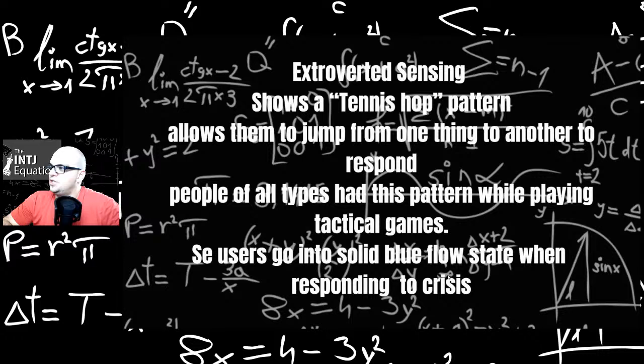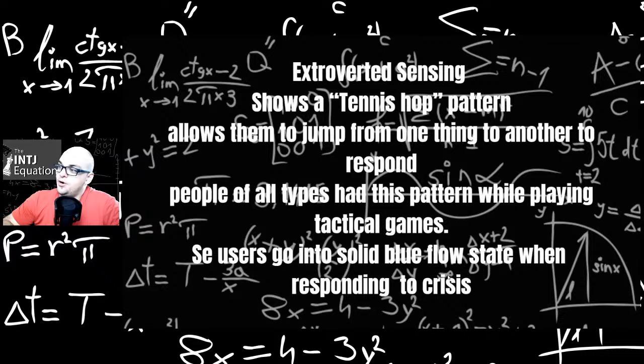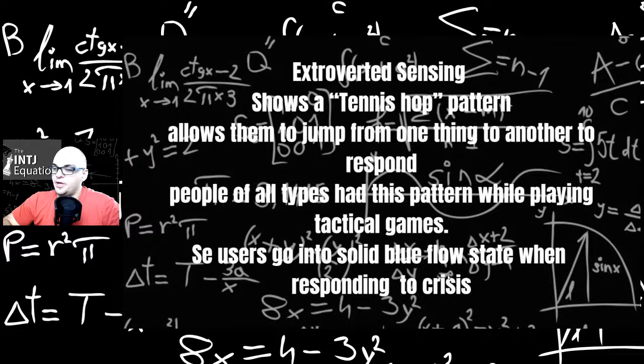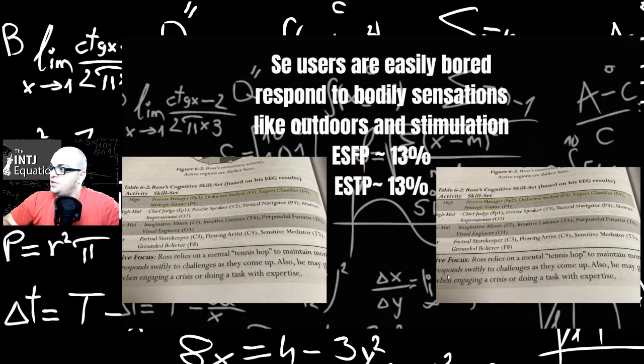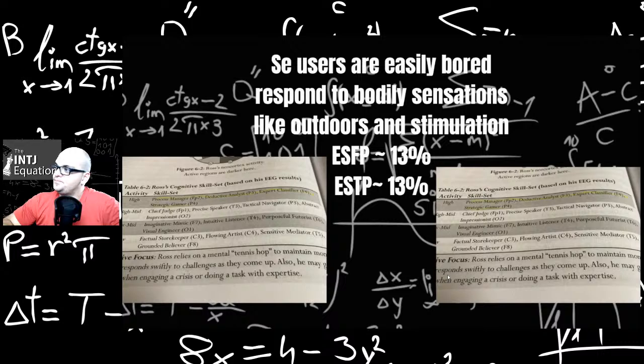Extroverted sensation. These are ESFPs and ESTPs. When they have an EEG scan, they show a tennis hop pattern. It allows them to jump from one thing to another to respond to people of all types in this pattern while playing tactical games. So one game he uses is Mario Kart. When all the types play Mario Kart, which is a tactical in-the-moment game, they show a tennis hop pattern in their brain activity. So it kind of mimics what high SE users use. SE users go in their solid blue flow state when responding to crisis. Yeah, they're made to be first responders as I've reiterated many times. SE users are easily bored, not meant to sit behind the desk all day, respond to bodily sensations like outdoors and stimulation. ESFPs and ESTPs probably make up 13% of the population. Probably sounds about right.